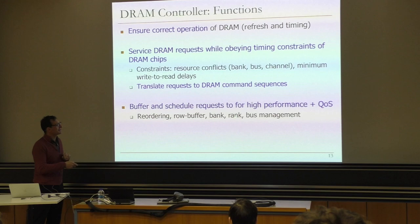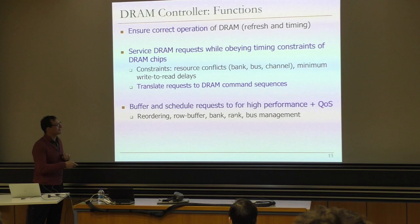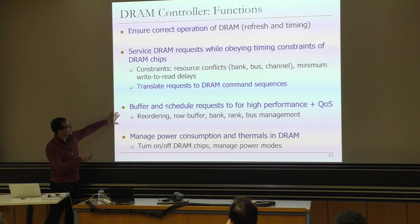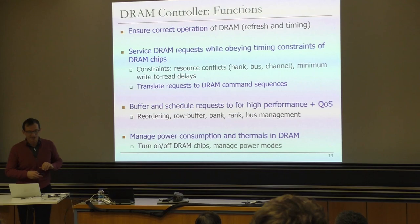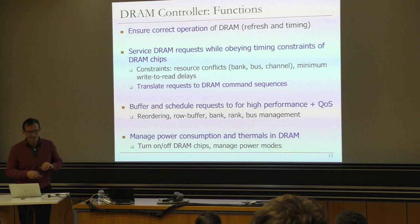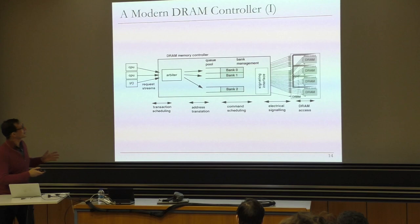You'll see this in your lab — bank, rank, and bus management. On top of correctness and performance, you have power, energy, and thermals. How do you ensure that you don't use power unnecessarily? Any power used unnecessarily is power taken away from computation. In a modern DRAM controller, you get requests from different cores and I/O devices, there's some arbiter, and then you decide which bank the request goes to, or which channel if you have multiple channels.